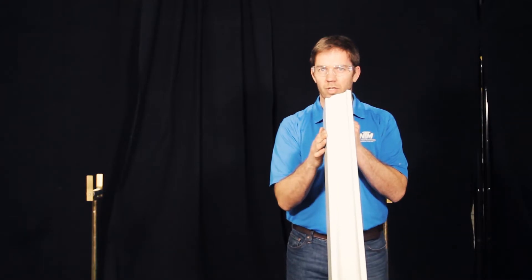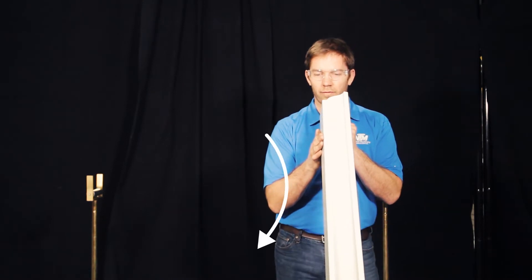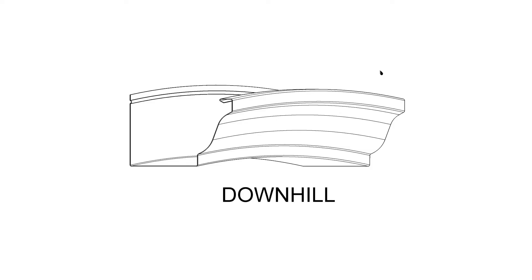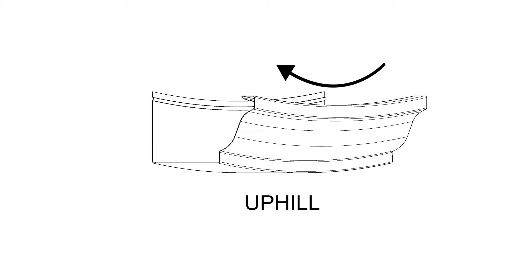The two options that you will see is either uphill or downhill. Downhill effect is where the gutter is going to kind of have this kind of arc on this corner here. The uphill effect is going to be where it curves uphill.